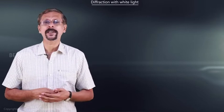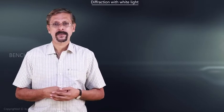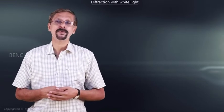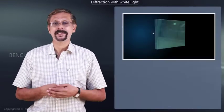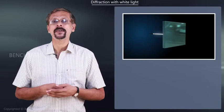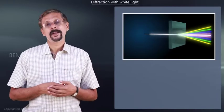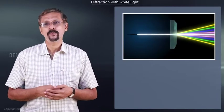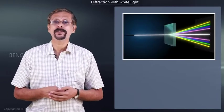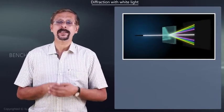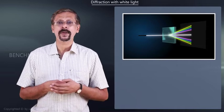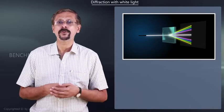Now let us see what happens when we make use of white light instead of a monochromatic light. As you already know, white light consists of all colors beginning from violet to red.